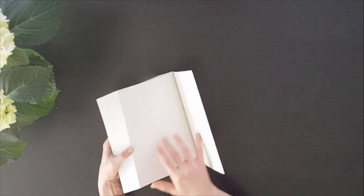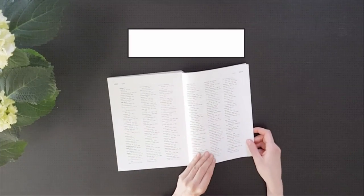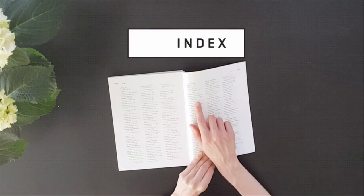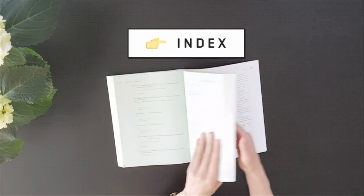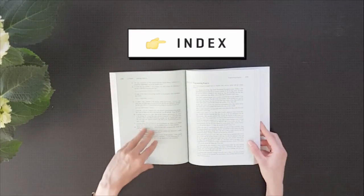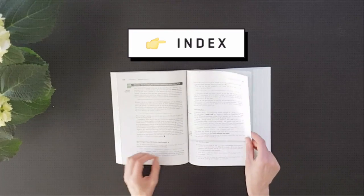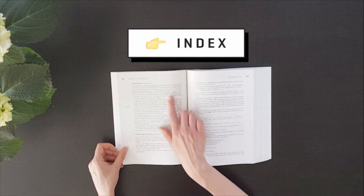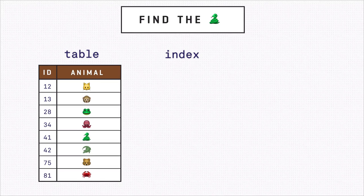First, let's open any book at the end. This is the index, the section of the book that points out where important keywords are. So if you want to find the term, you can look up the pages that reference the term instead of going through the whole book. Similarly, we can ask our database to keep an index next to a table, and when we want to find something specific, instead of going through the whole table, we will use the index to help with our searches.